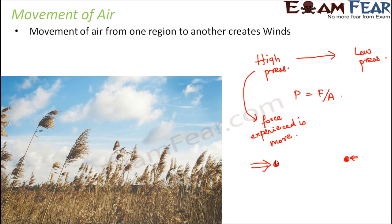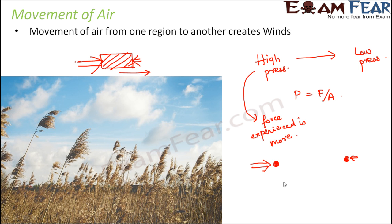Wherever you experience more force, the particle will move according to that force. For example, if you have a box lying on the floor and you push it from one side while your friend pushes from the other side, but your force is a lot more than your friend's force, the box will move in your direction because the force in that direction is more. Similarly, since particles experience more force in the high pressure region, they tend to move from high pressure to low pressure regions. When all the particles of air move this way, the air as a whole moves from high pressure to low pressure region, and this creates winds.